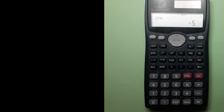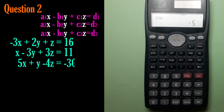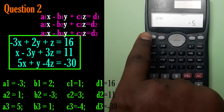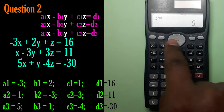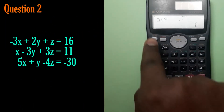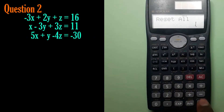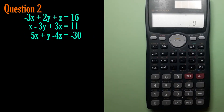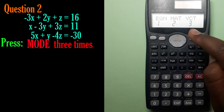What if we are asked to solve simultaneous equations with three unknowns? First, let's clear the memory again: shift, mode, number three, press equals, equals — two times. Then press mode three times, then one, two, three.